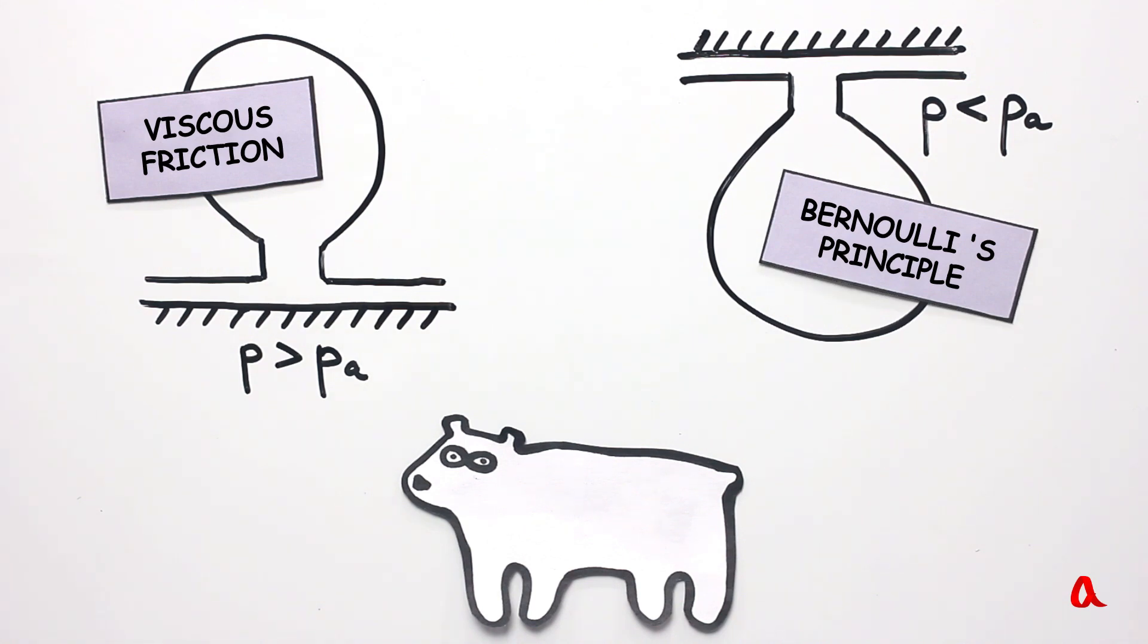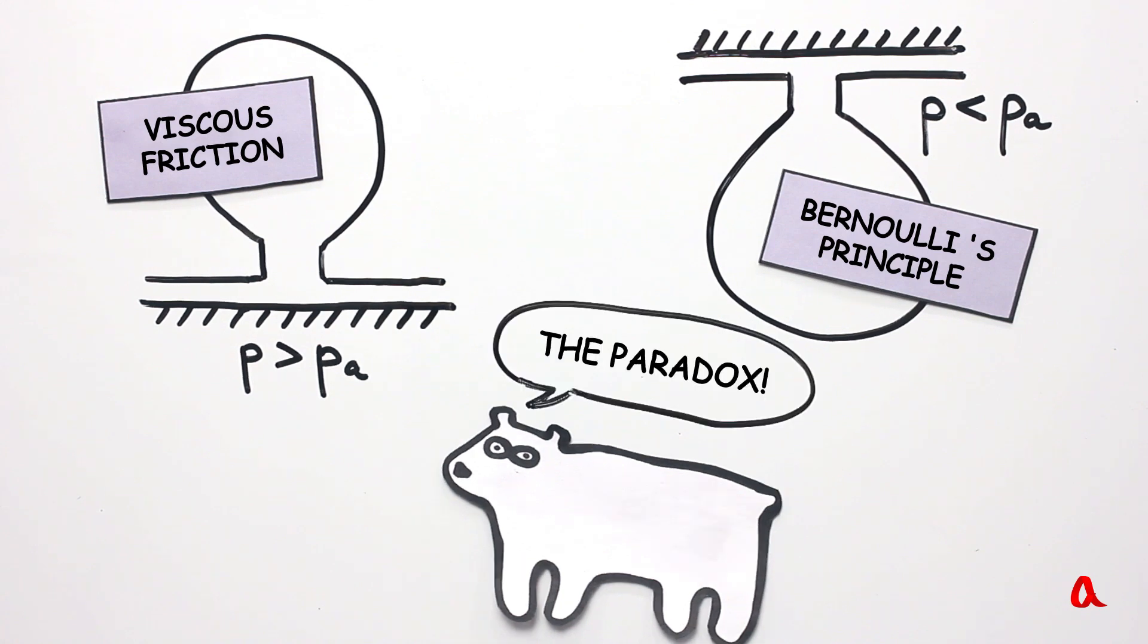Well, in that case, the same flow of air in the slot between the disc and the supporting surface can create both elevated and reduced pressure. Do you think you could solve this paradox?